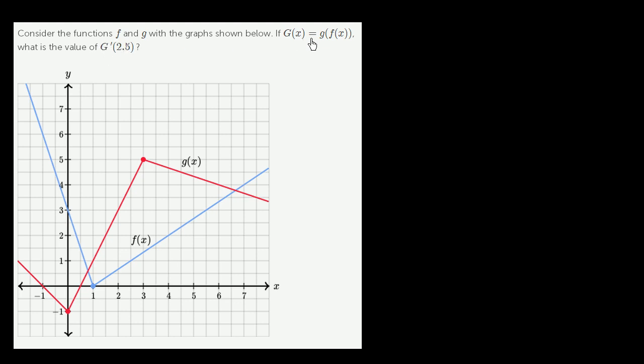So G of x is a composition of g and f. It's g of f of x, or lowercase g of f of x. They don't graph capital G of x here. They just give us the graphs of lowercase g of x and lowercase f of x.